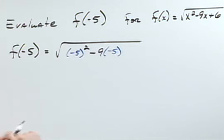So f of negative 5, if I put negative 5 in wherever there's an x, I would have negative 5 squared minus 9 times negative 5 plus 6.